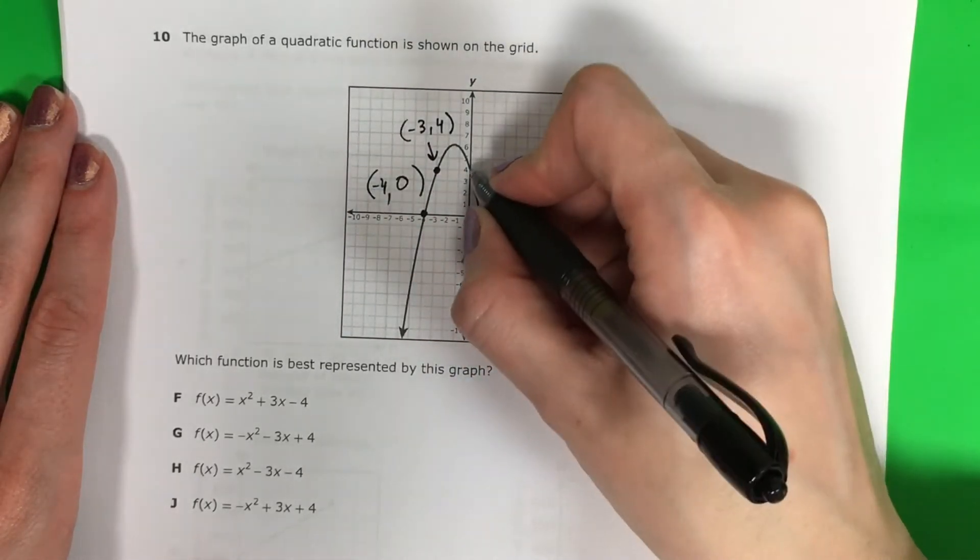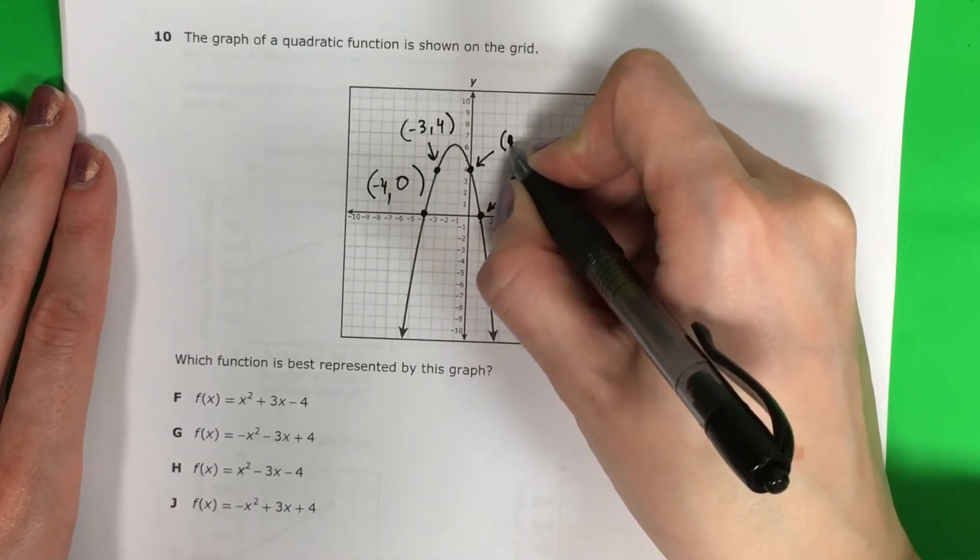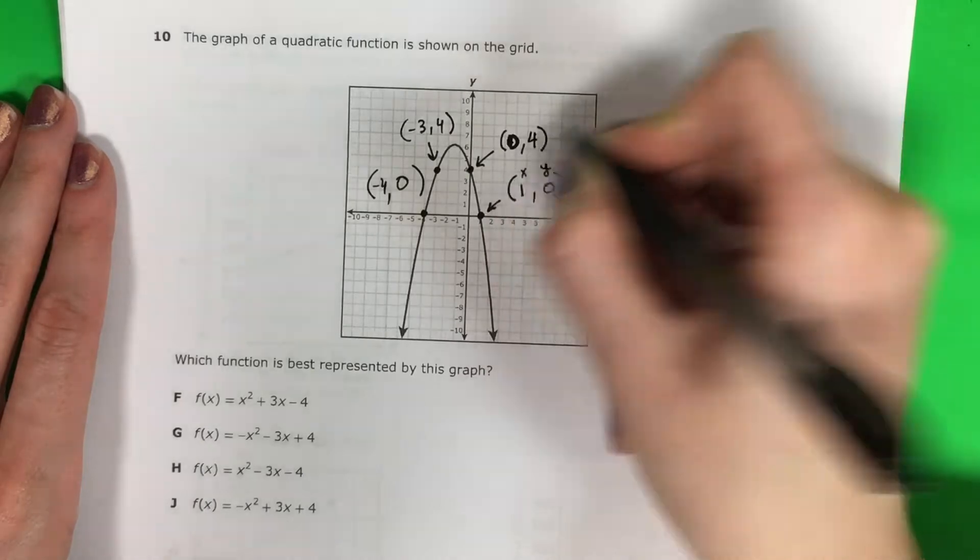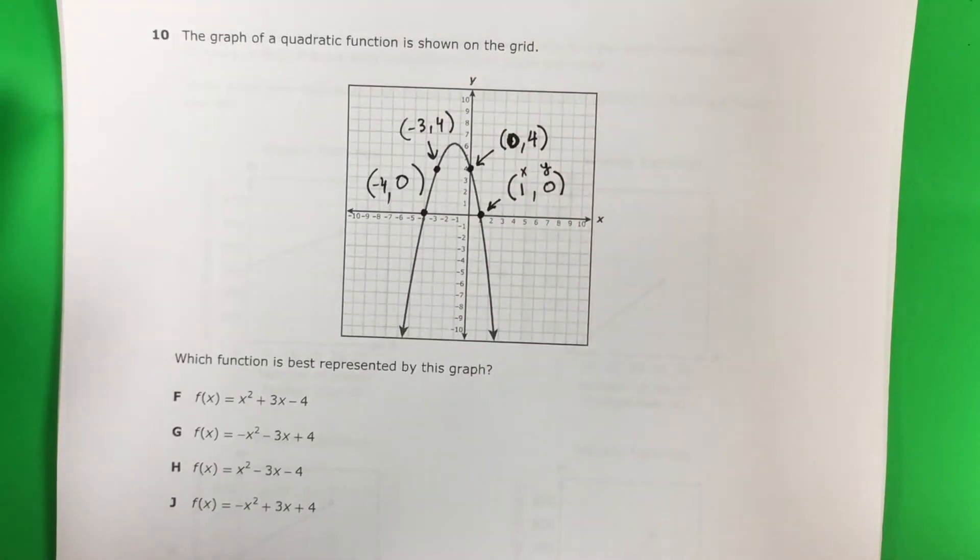You can pick a lot of other points. You can pick this y-intercept here, which is 0, 4. OK, you can pick a lot of points. You don't need too many. You just need like 3.